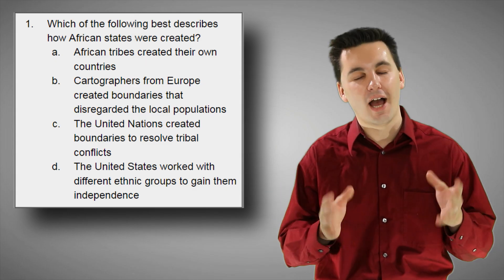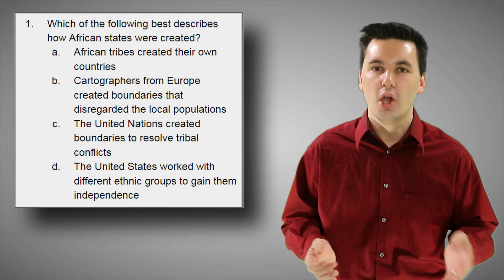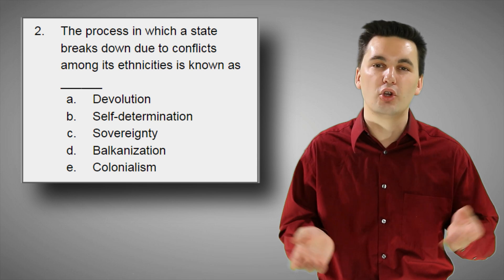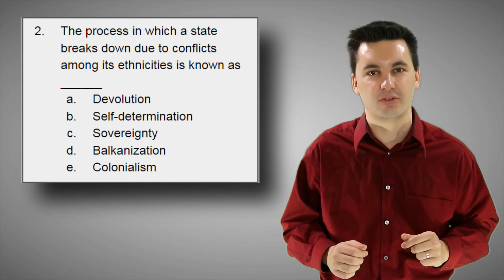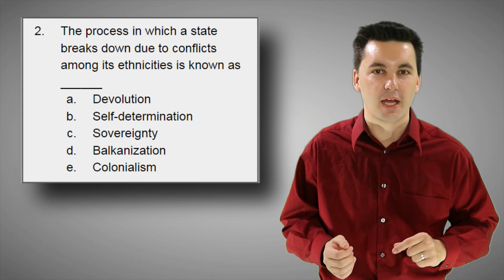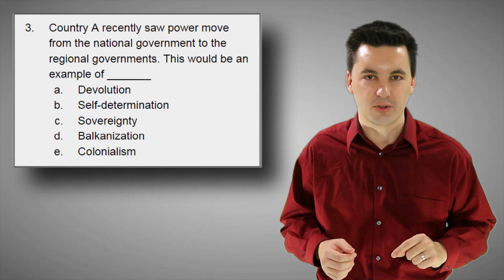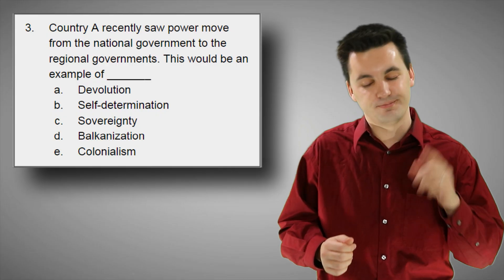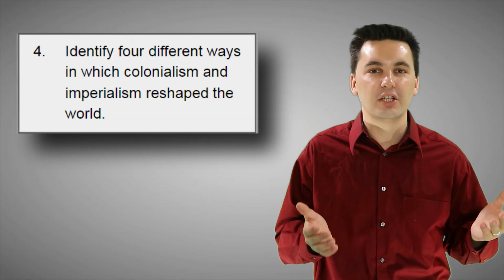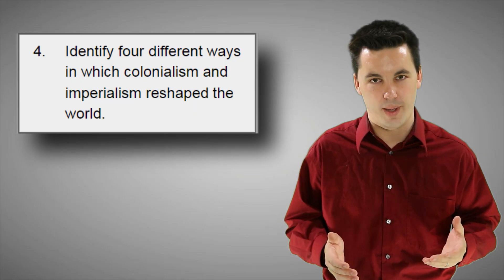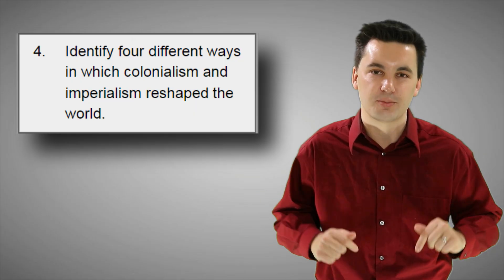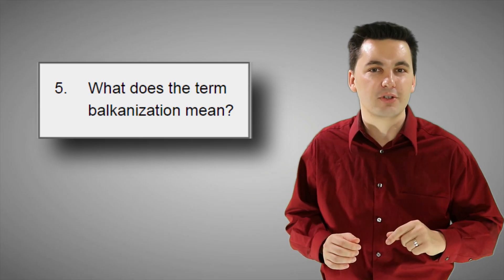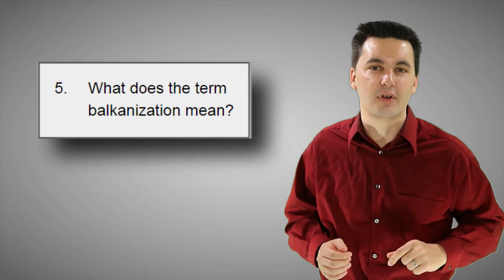Alright geographers, you know the drill. The time has come to do our practice quiz — review the concepts we've talked about in this video and you can see the questions on the screen right now. Once you're done, go check your answers in the comment section. Also, if you haven't subscribed yet, consider subscribing to support the channel. And if you're struggling in your AP Human Geography class and need extra help, don't forget to check out my AP Human Geography Ultimate Review Packet — you can find a link in the description. It covers all the units and will help you get an A in the class and a 5 on the national exam.